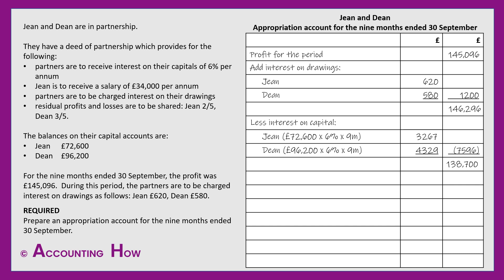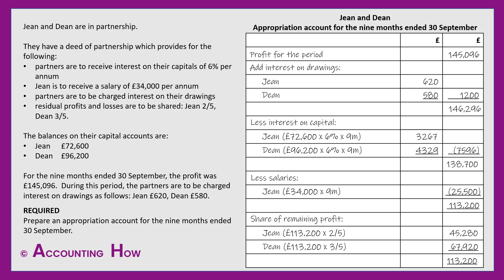That leaves us with £138,700. We also have to remember that Jean is to receive a salary, but again it needs to be adjusted — she'll only receive three quarters of £34,000 because the appropriation account covers just three quarters of the year. Subtracting her salary leaves £113,200 to be shared between the partners. Their deed of partnership provides for Jean to receive two-fifths and Dean three-fifths. Sharing in that ratio gives each partner their amount, and the question is complete.